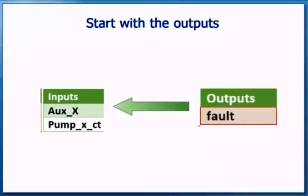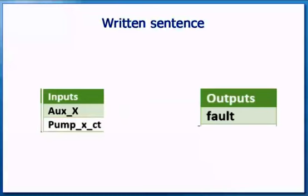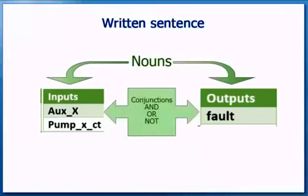Output 1 comes on when PUMPX is in fault. There is an auxiliary contact AUXX to tell us when the pump is switched on, and PUMPXCT to indicate that PUMPX is running. You can use a written English sentence to describe the operation, and from that sentence determine what the program will look like. The nouns are the inputs and outputs. AND means the inputs are in series, and OR means the inputs are in parallel.